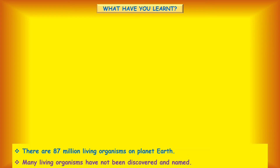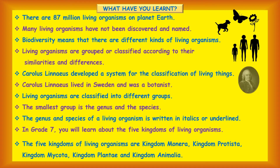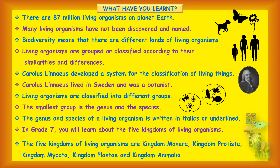Let us summarize what you have learned in this lesson. There are 8.7 million living organisms on planet Earth. Many living organisms have not been discovered and named. Biodiversity means that there are different kinds of living organisms. Living organisms are grouped or classified according to their similarities and differences. Carolus Linnaeus developed a system for the classification of living things — he lived in Sweden and was a botanist. The smallest group is the genus and the species, which are written in italics or underlined. In grade 7, you will learn about the five kingdoms: Kingdom Monera, Kingdom Protista, Kingdom Mycota, Kingdom Plantia, and Kingdom Animalia.